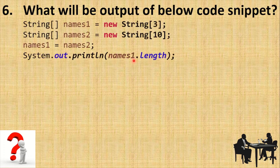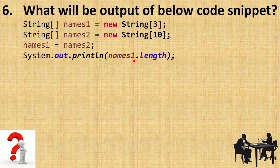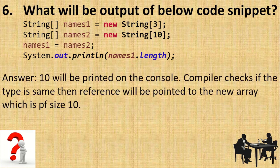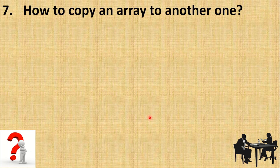Now let's see the next code snippet. We have a 'names1' array of type String with size 3, and a 'names2' array with size 10. If we assign names1 = names2 and then print names1.length, what will the output be? The answer is 10, because the compiler only checks that the type is the same — String in both cases — and then names1 starts pointing to the object that names2 was pointing to, so names1 becomes that same array of size 10.